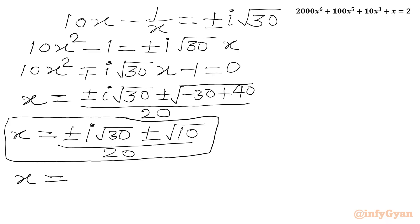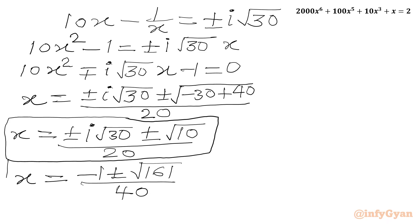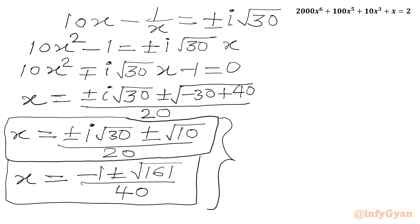Writing all results together: the two real solutions are (−1 ± √161) over 40, and the four complex solutions come from the ±i√30 substitution — giving all six solutions total. I hope you liked this video. Thank you for watching. Please like, share, and subscribe. Bye-bye, good luck, take care.